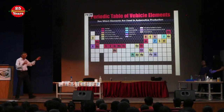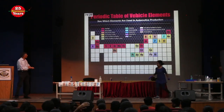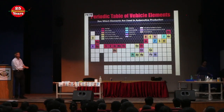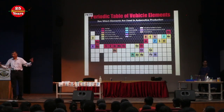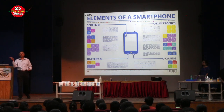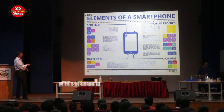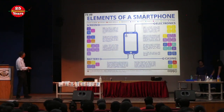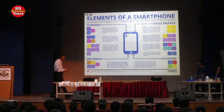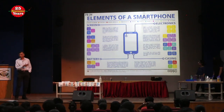Lithium and cobalt will be increasingly used for electric vehicles. And this is something you cannot do without — your mobile phone. I hope all of you have it at least in mute mode. The screen contains many elements; battery has lithium and cobalt; casing has carbon, magnesium, bromine, and nickel — that's for the stainless steel. I can ask many questions from it, because a lot of you are using mobile phones. One question is: what is bromine doing in the casing?